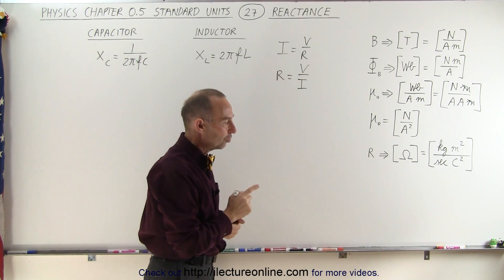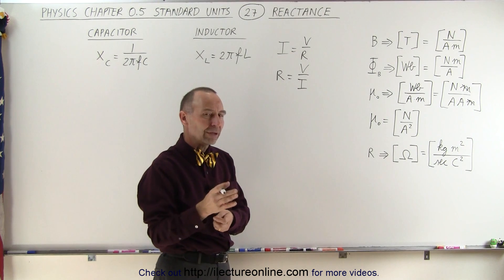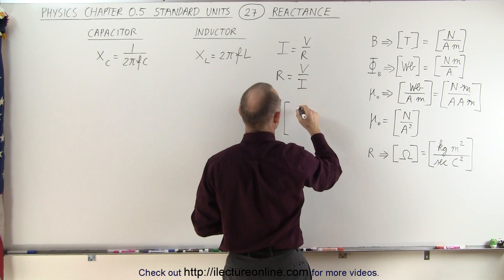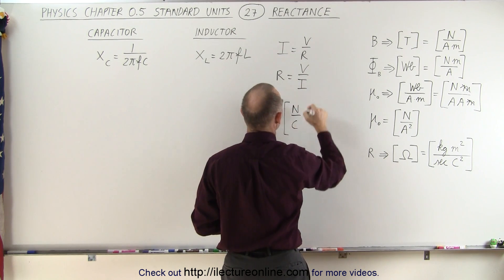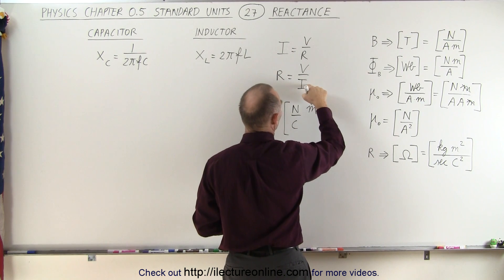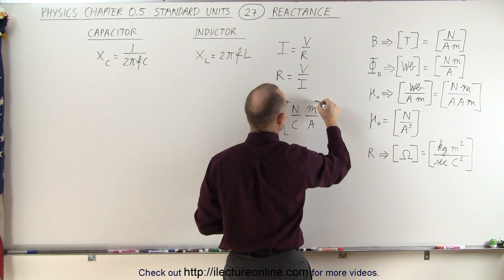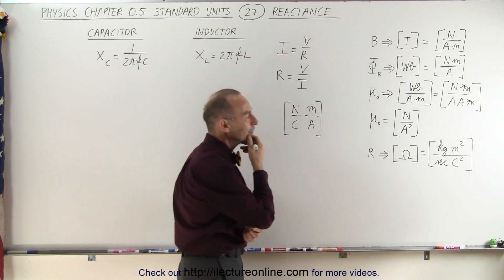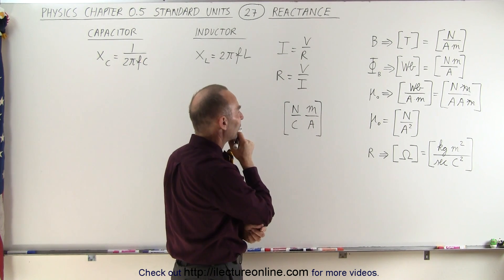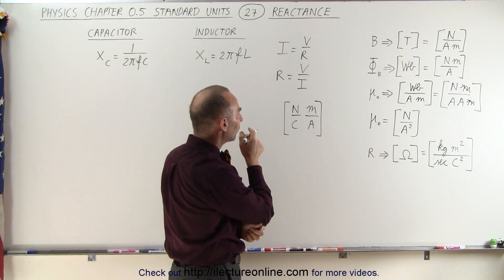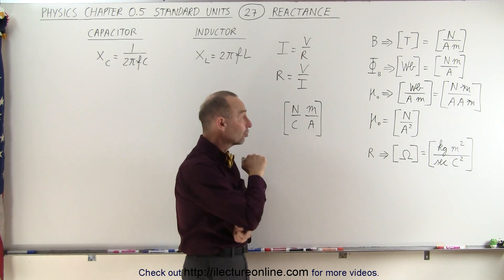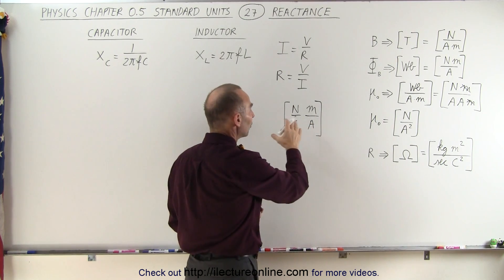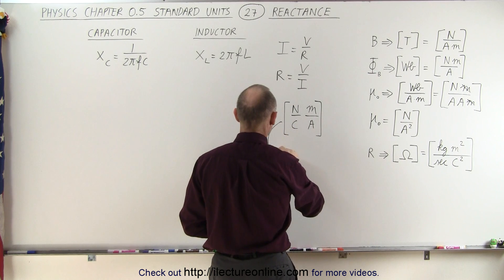The units for voltage are the units for electric field times distance. Voltage has units of newtons per coulomb times meters. The unit for current is amps. That means the units for resistance are newton meters per coulomb times amps. We know that a newton is kilograms meters per second squared, and an amp is a coulomb per second.